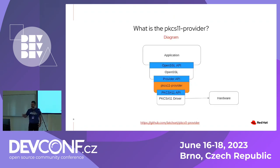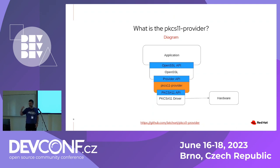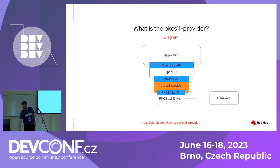The PKCS11 provider is just taking this API and sticking it into OpenSSL with a middle layer that translates between the OpenSSL provider API and the driver you want to use for your hardware. It's just another abstraction layer in the middle, and eventually you go and talk to hardware, a software token, or whatever it is. It is hosted on GitHub.